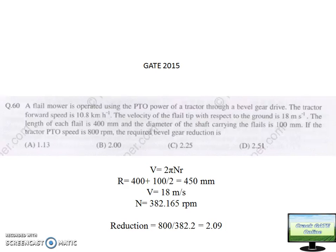Let's go through one more question. This question was asked very recently in year 2015. A flail mower is operated using PTO power of tractor through bevel gear drive. The tractor forward speed is 10.8 km per hour. The velocity of flail tip with respect to ground is 18 m per second. The length of each flail is 400 mm and diameter of shaft carrying the flail is 100 mm. If the tractor PTO speed is 800 rpm, the required bevel gear reduction is?